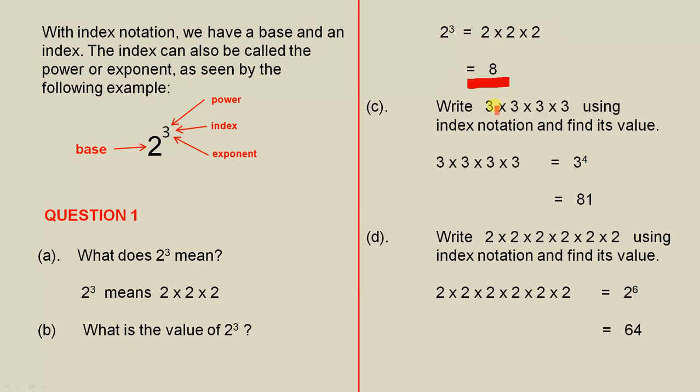Write 3 times 3 times 3 times 3 using index notation and find its value. So here we have these 3s multiplied together. 3 is the base, and 4 is the index or the power or the exponent. So 3 to the power of 4 is 81. 3 times 3 is 9, 9 times 3 is 27, 27 times 3 is 81.